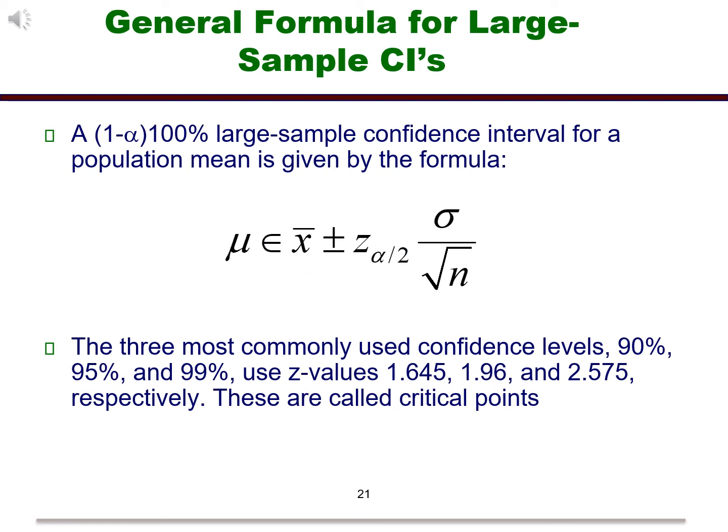In general, we can determine a large sample confidence interval for the mean by using the formula on the slide. Notice that we call it a large sample confidence interval. This is because unless the data comes from a normal distribution with known sigma, we need to have a fairly large sample size for this to work. The slide also yields the three most commonly used values for Z. These values are called critical points.